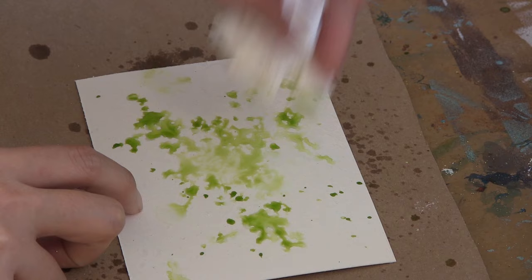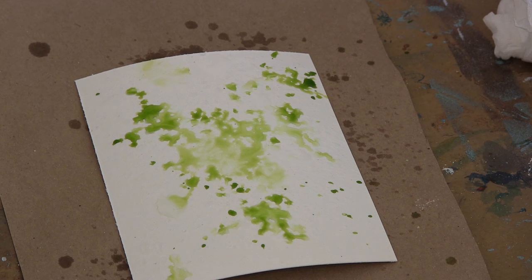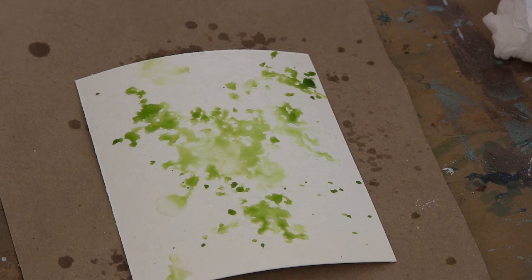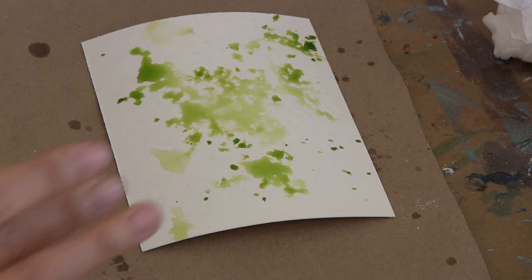And while it's still wet, if you find that there are areas that are kind of boring where it's just one tint, where it's not really varied, just dab it with a tissue like I've done.